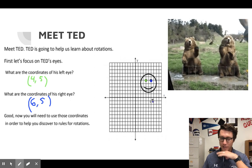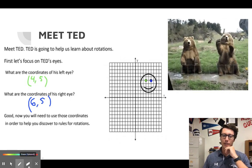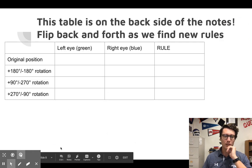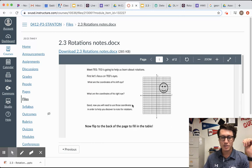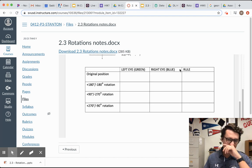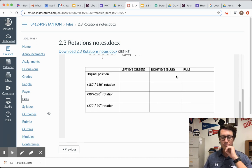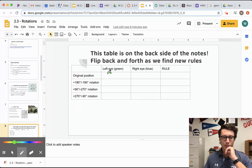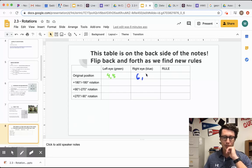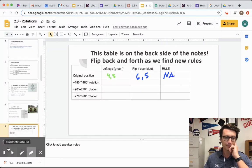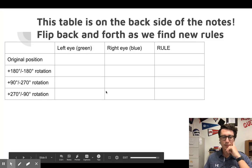We're going to use these coordinates. Ted is going to do a bunch of rotations to help us figure out the rules. This table is on the back side of your notes — flip back and forth as we find the new rules. Left eye is green, right eye is blue. The original position of his left green eye is (4, 5) and right blue eye is (6, 5). Fill those into your chart. There is no rule yet for the original position, so we put NA.